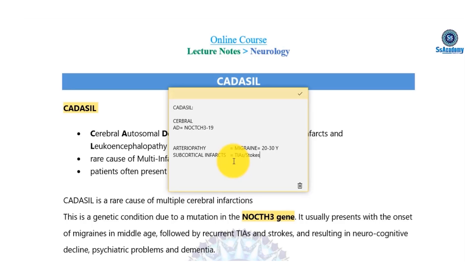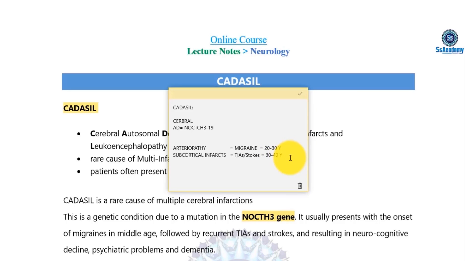The next phase is subcortical infarcts — S in CADASIL — which means TIAs and strokes. This phase usually occurs between 30 to 40 years of age. CADASIL is an important cause of young stroke that you need to remember, typically manifesting in the 30 to 40 year age group.